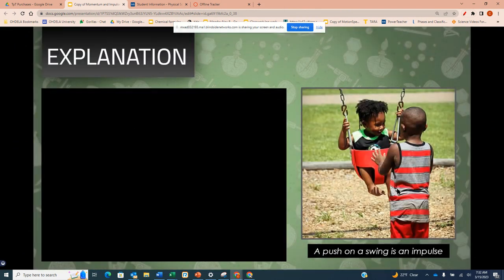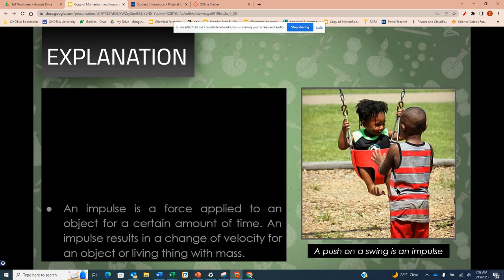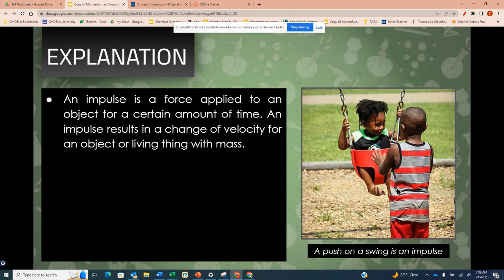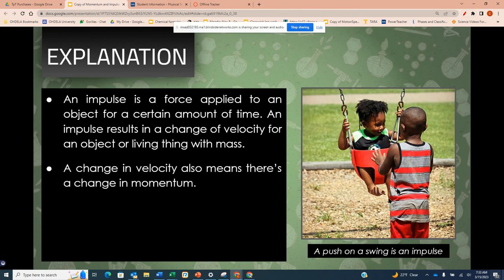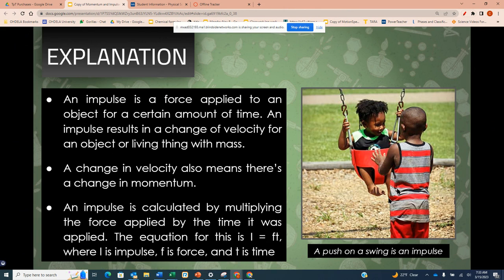A push on a swing is an impulse. An impulse is a force applied to an object for a certain amount of time. An impulse results in a change of velocity for an object or living thing with mass. A change in velocity also means a change in momentum. An impulse is calculated by multiplying the force applied by the time it was applied.